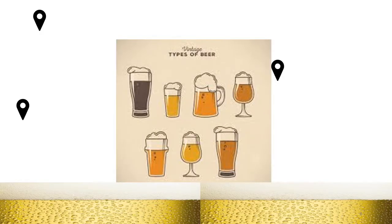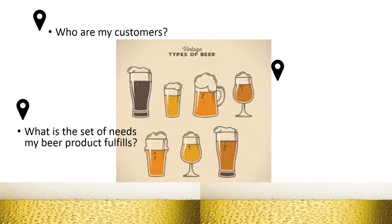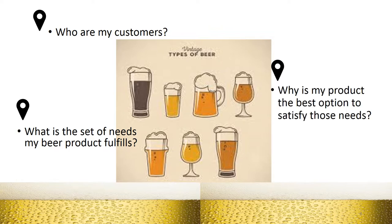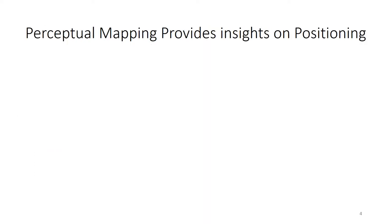Then several more questions came up. Who are my customers? What is the sense of needs my beer product fulfills? Why is my product the best option to satisfy those needs? While struggling to come up with some ideas, she poured herself a glass of beer, and right after her first sip, she started to say: maybe positioning will help answer all those questions.